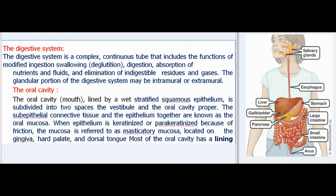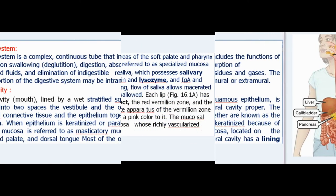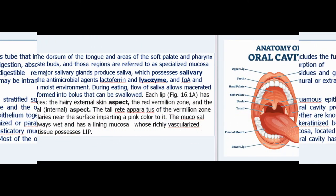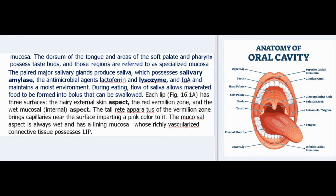Masticatory mucosa is located on the gingiva, hard palate, and dorsal tongue. Most of the oral cavity has a lining mucosa. The dorsum of the tongue and areas of the soft palate and pharynx possess taste buds, and those regions are referred to as specialized mucosa.